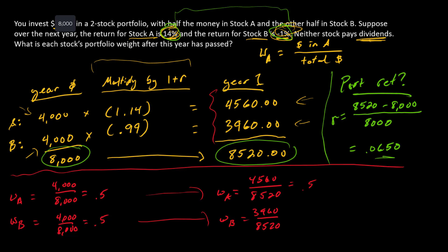So that's 0.5352, and here we have 1 minus that, or 3960 divided by 8520, which is 0.4648. So there are our final answers.